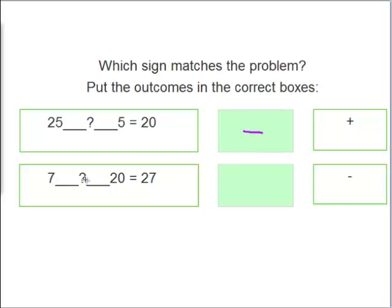And is it 7 plus 20 equals 27? Or 7 minus 20? That equals 27. Very good. Do an addition sign.